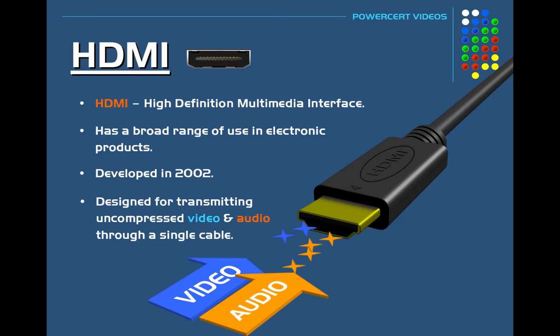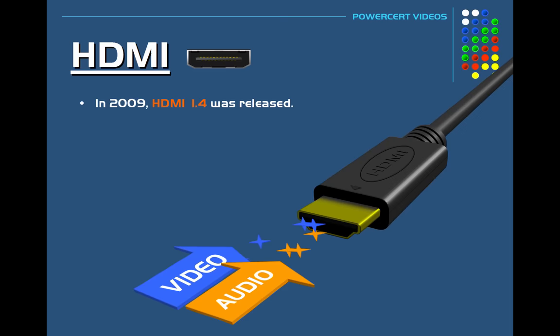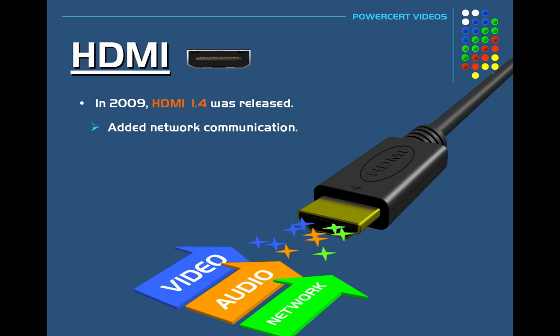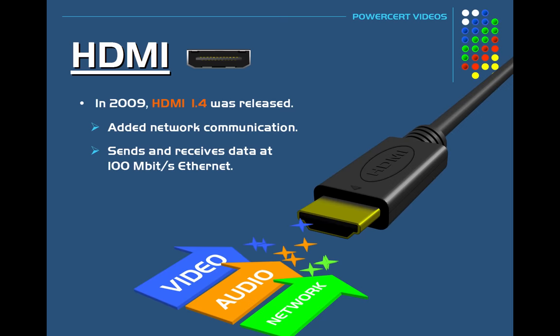HDMI is one of the best standards for high definition in consumer electronics, delivering crystal clear video as well as audio. In 2009, HDMI 1.4 was released and it added another channel to HDMI for data, which has the capability of network communication. Connected devices using this feature give HDMI the ability to send and receive data at 100 megabits per second ethernet. So in addition to video and audio, the HDMI cable can also handle ethernet networking. HDMI 1.4 also added support for 4K video at 30 Hz.